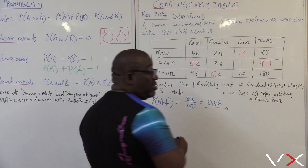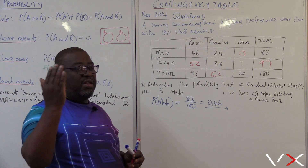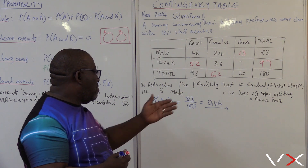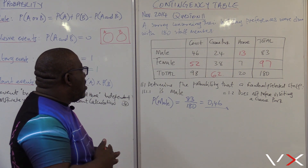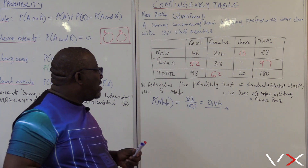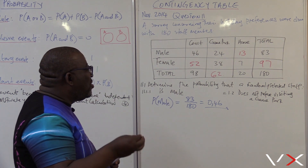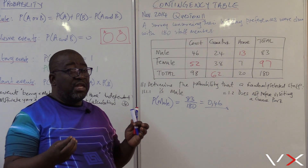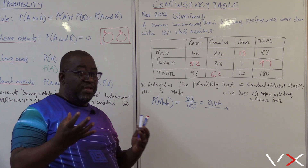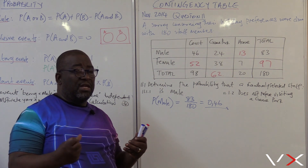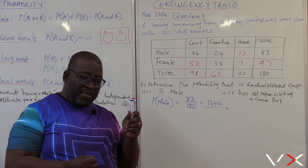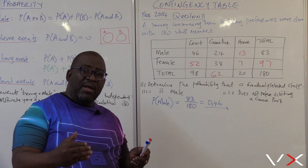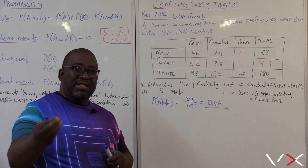Remember that your probability is always between zero and one — you'll never get it above one or negative. That's the probability of male. Now, determine the probability that a randomly selected staff member does not prefer visiting the game park. There are those that prefer visiting the game park and those that do not — they complement each other. These are complementary events: the probability of preferring to visit the game park plus the probability of not preferring to visit the game park equals 1.